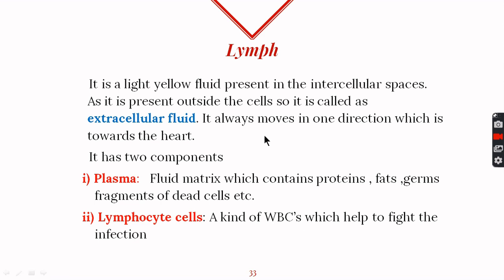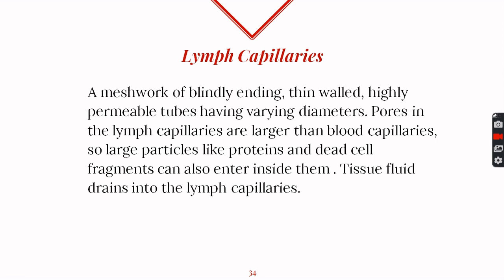One more thing about lymph which is different from blood: lymph can move only in one direction, which is towards the heart, while blood moves in both directions — towards as well as away from the heart. From the extracellular spaces, this lymph is absorbed by the lymph capillaries, which are able to do so because they have large pores in their walls, larger than those present in blood capillaries. So they are highly permeable and can absorb larger particles of proteins and fragments of dead cells.